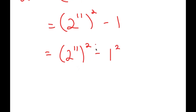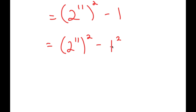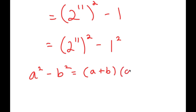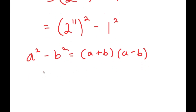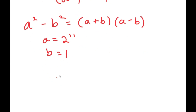The reason I rewrote 1 as 1 squared is because now I can use the property a squared minus b squared is equal to a plus b times a minus b. So, to clarify, a is 2 to the power of 11 and b is 1. Now I get 2 to the power of 11 plus 1 times 2 to the power of 11 minus 1.